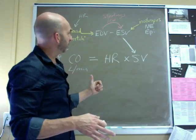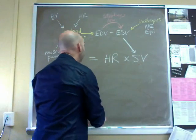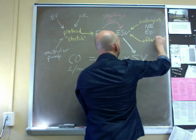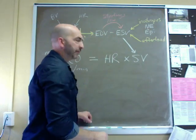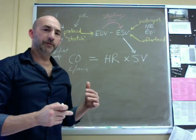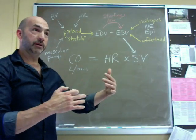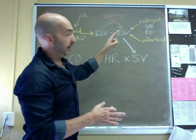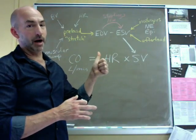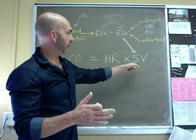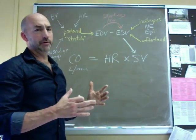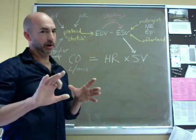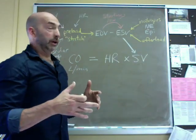The other key factor that can affect ESV is what's called afterload. And afterload is, think of it as the resistance to ejecting the blood. So if blood pressure is high, then it's difficult to open the semilunar valves. We have to spend more time isovolumically contracting, which means we spend less time ejecting, which means ESV would go up. We would leave more behind because we eject less. If we eject less, what we eject is stroke volume, so stroke volume would fall. So high afterload is a bad thing.